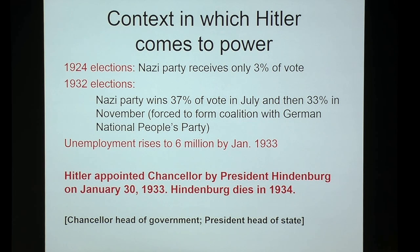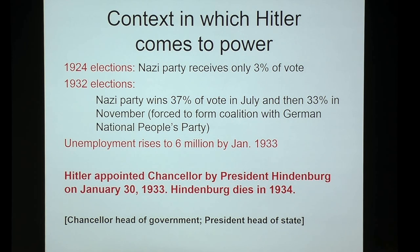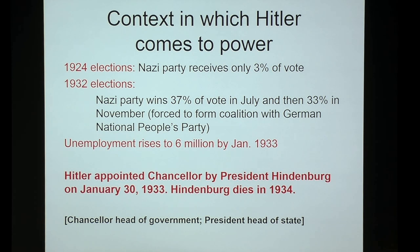The context was that unemployment reached a record high in 1933 — tremendous numbers of people disenfranchised, upset, looking for answers, wondering about the future. The Weimar constitution wasn't working, and people wanted a new paradigm. The other problem: when Hindenburg died in 1934, he wasn't replaced — there were no elections. Hitler consolidated power by becoming both chancellor and president.